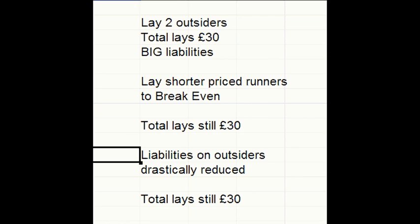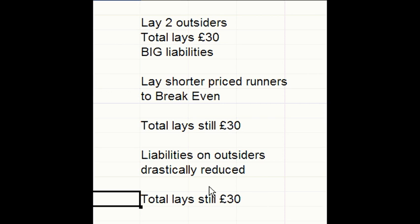The liabilities will be drastically reduced. Our total lays will still be £30 overall. So if we don't hit the winner with any of our lays, £30 is what we would pick up. And if we hit the winner with our two outsiders, our liabilities will be drastically reduced and our other lays we will break even. Let's look at that in practice.